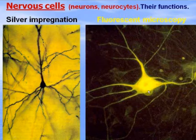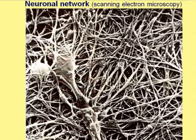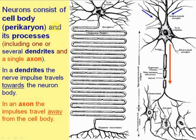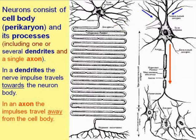This is a picture of one nerve cell following silver impregnation, and in a fluorescent microscope. This is a neuronal network visible under scanning electron microscopy. This is a neuron body and numerous processes. Neurons consist of a cell body, called the perikaryon — 'karyon' from Greek meaning nucleus — so this is a region around the nucleus, or cell body, and processes including one axon and several dendrites.